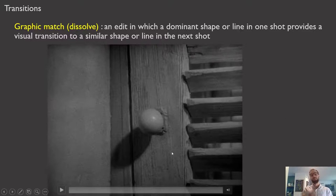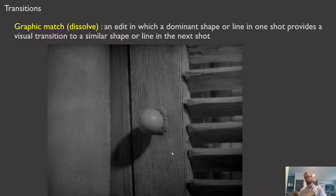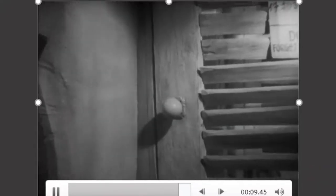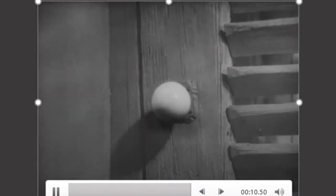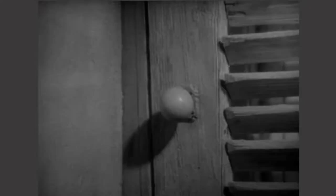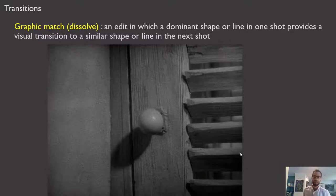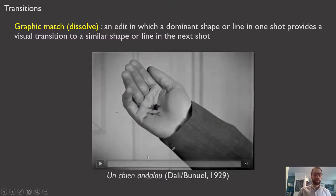Those are our transitions — the two kinds: dissolves and fade outs. Now I want to look at a special kind of cut called the graphic match. A graphic match cut is an edit in which a dominant shape or line in one shot provides a visual transition to a similar shape or line in the next shot. I'm going to show you one of the coolest graphic matches I've ever seen — the doorknob becomes a cue ball in a very slippery, perceptually interesting way. Most graphic matches won't be quite this smooth.